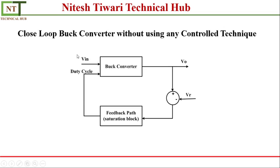A simple property of the buck converter: when you apply input voltage, the output voltage is less than the input voltage, meaning V_out is always less than V_in. So if you apply a reference value of Vr1, then V_out will be approximately Vr1. The next day, if you require voltage Vr2, your circuit will try to give output Vr2.